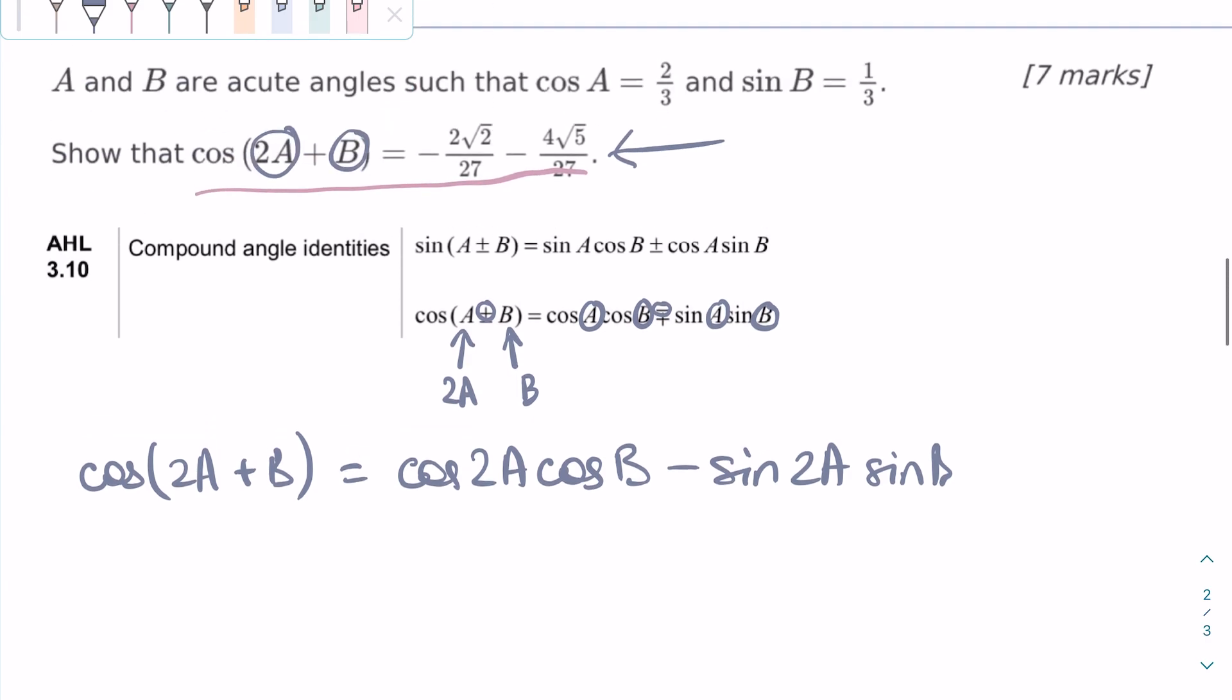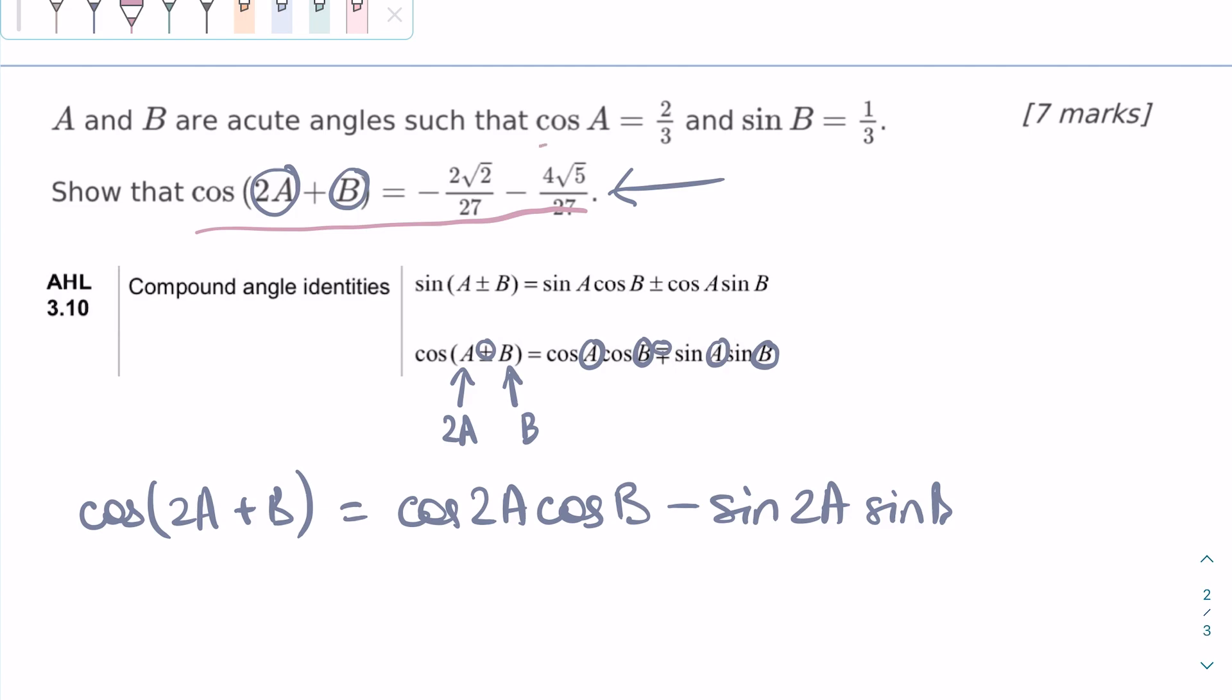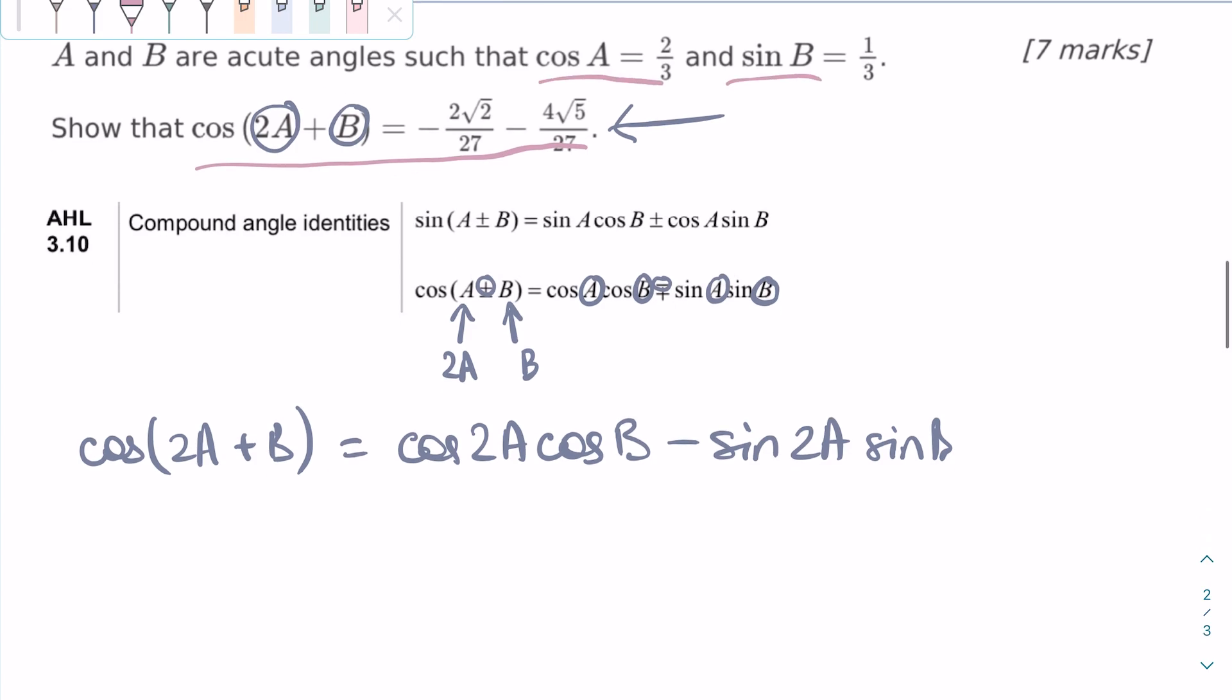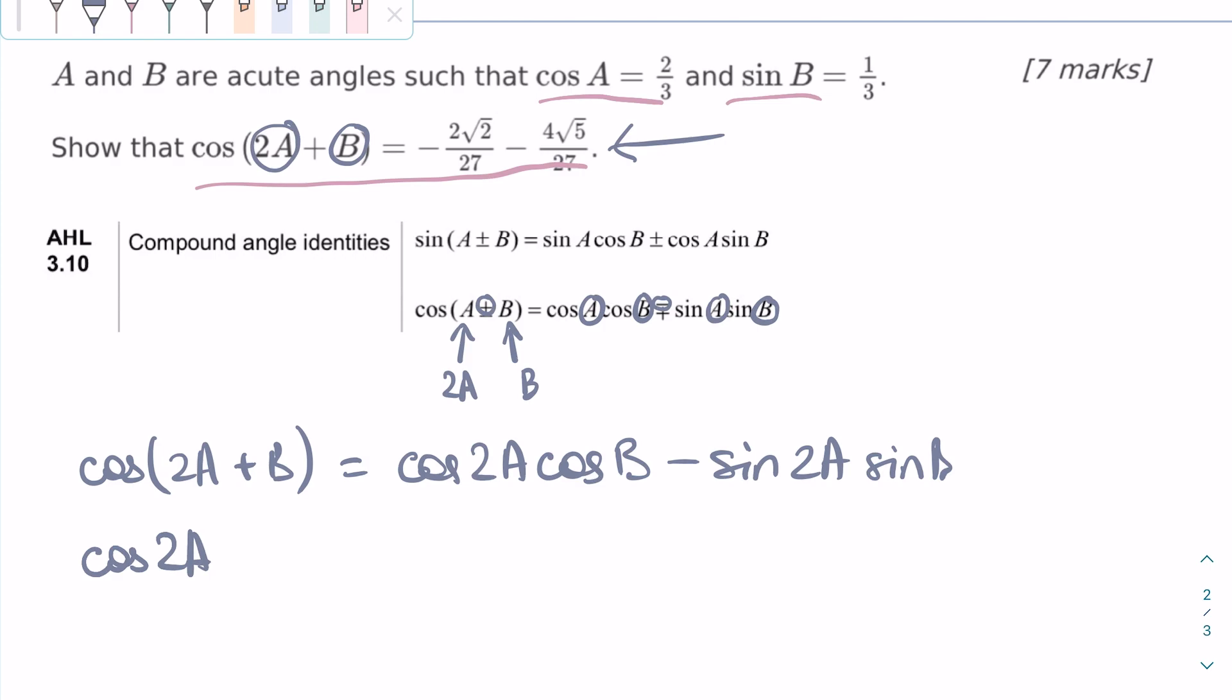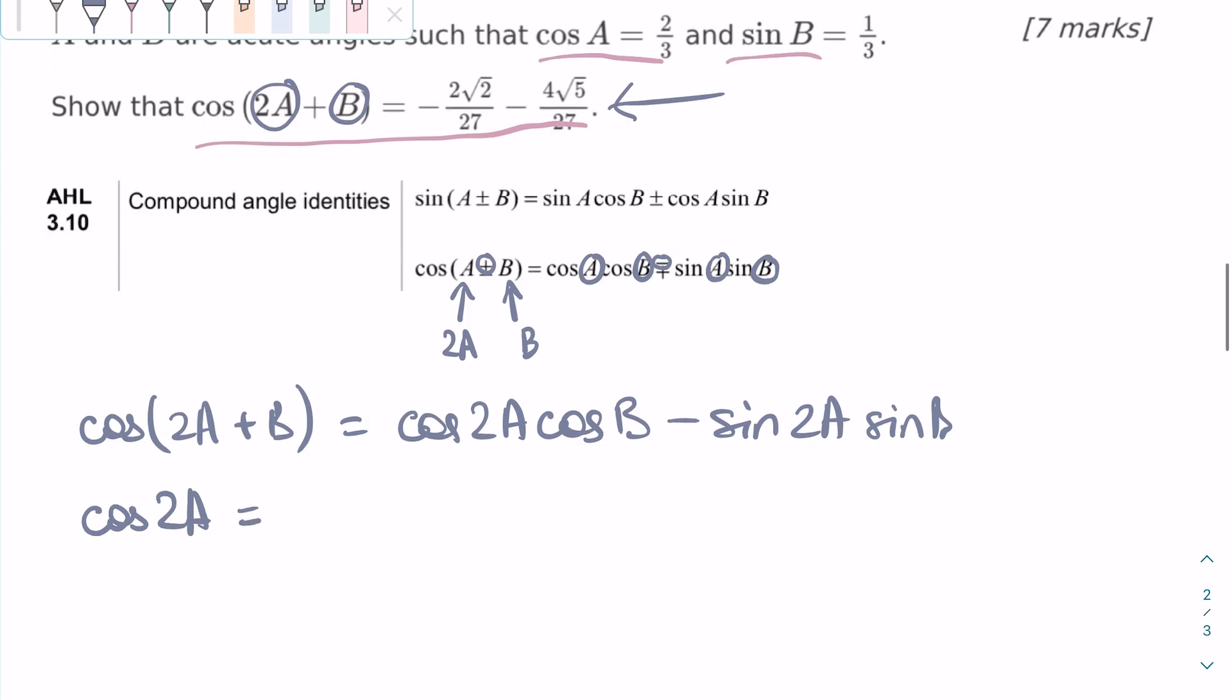Afterwards, we need to use the other givens, which is that cosine A and sine B are equal to these numbers and substitute them into this equation. To actually get to the answer that the question is asking us to do, we have to find the numerical values of cosine 2A, cosine B, sine 2A, and sine B.